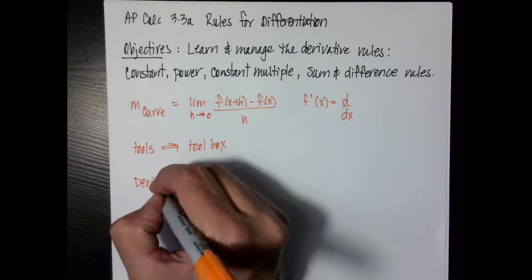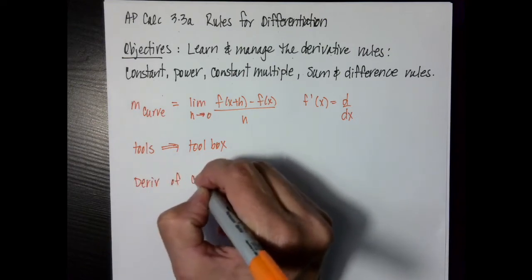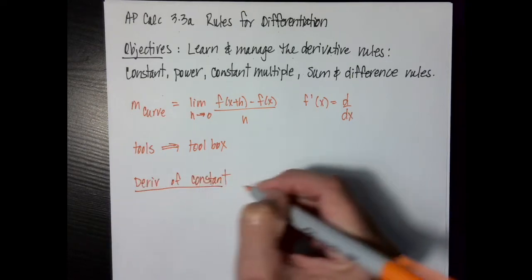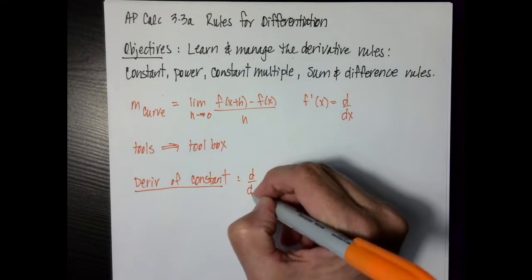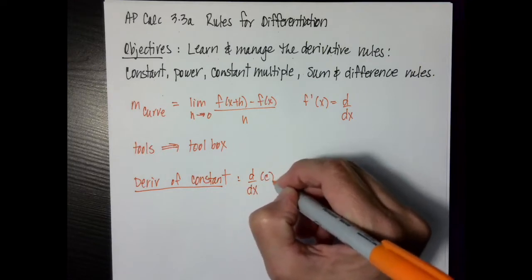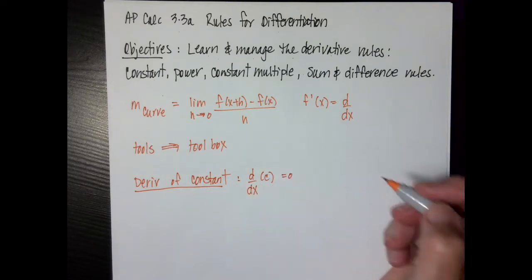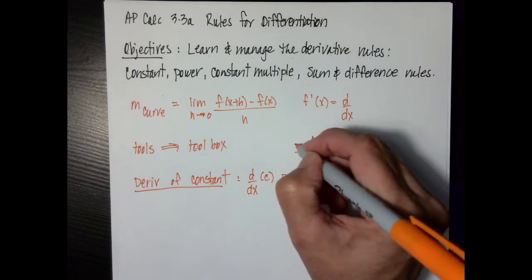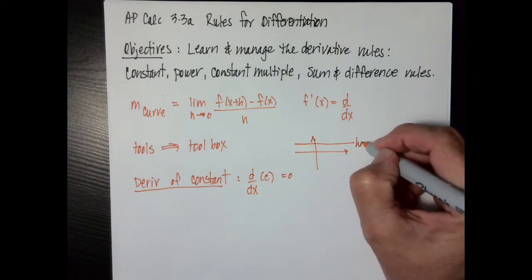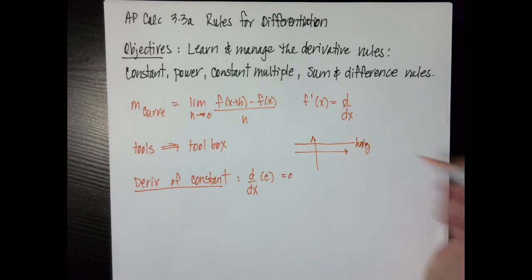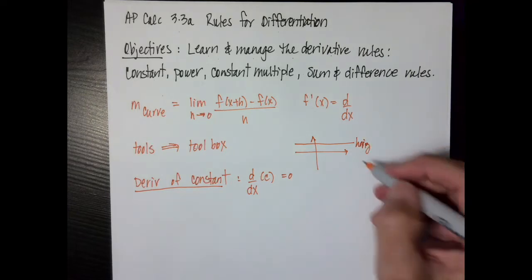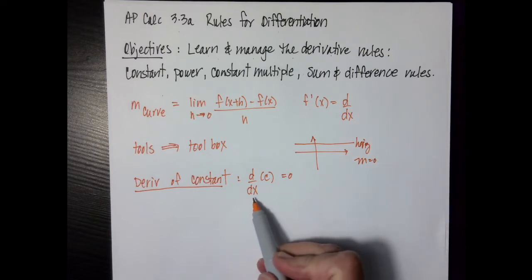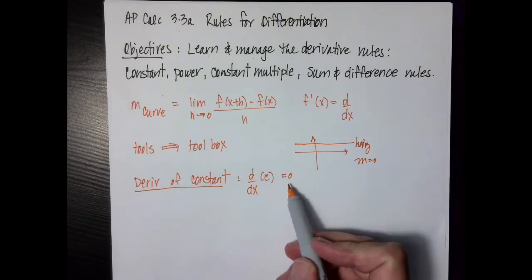The derivative of a constant — and these are all on the sheet of formulas that I've given you, but it's nice to talk through them. The derivative of a constant is zero. If you think about that, if I have a graph and I have a horizontal line, the slope of that horizontal line is zero. Therefore, the slope of a constant is zero.